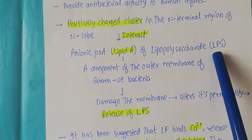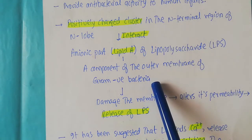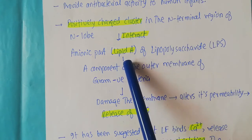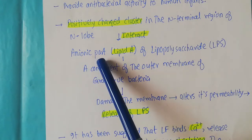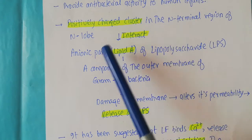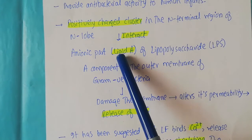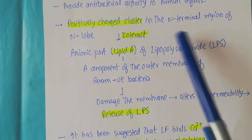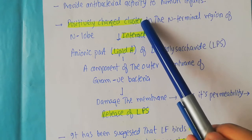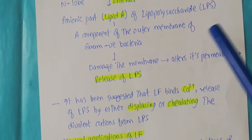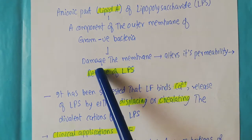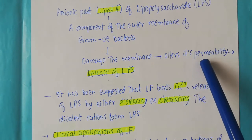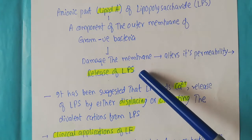Lipopolysaccharide is a component of the outer membrane of gram-negative bacteria and contains a specialized lipid known as lipid A. Lipid A has an anionic, or negative, charge. So the positively charged cluster interacts with the negatively charged lipid A. During this interaction, it damages the lipopolysaccharide, thereby altering membrane permeability and causing the release of LPS.